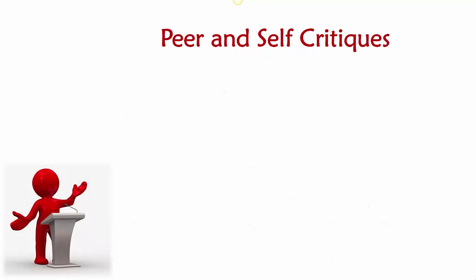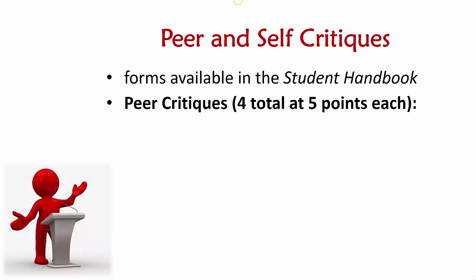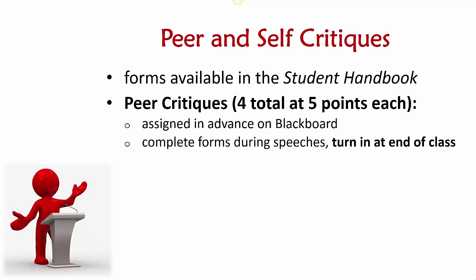For your informative and persuasive speech rounds, you'll be responsible for some peer and self critiques so you can learn the process of critical listening, evaluation, and constructive feedback. The forms are available in the student handbook — perforated pages and everything. You'll have a total of four peer critiques, listening and evaluating two peer speeches for each round. They'll be assigned in advance on Blackboard. During the speeches, you'll listen, take notes on the forms, and turn them in at the end of class. You really need to include constructive written feedback, not just check boxes, because getting concrete suggestions is one of the best ways to learn effective public speaking.